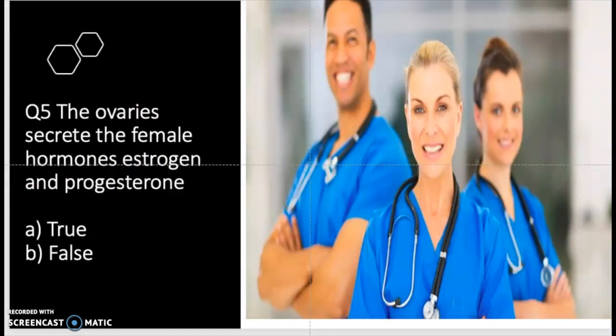Question number five: the ovaries secrete the female hormones estrogen and progesterone. I hope you can get this one correct because we did talk about this in class. The ovaries do produce hormones such as estrogen and progesterone.